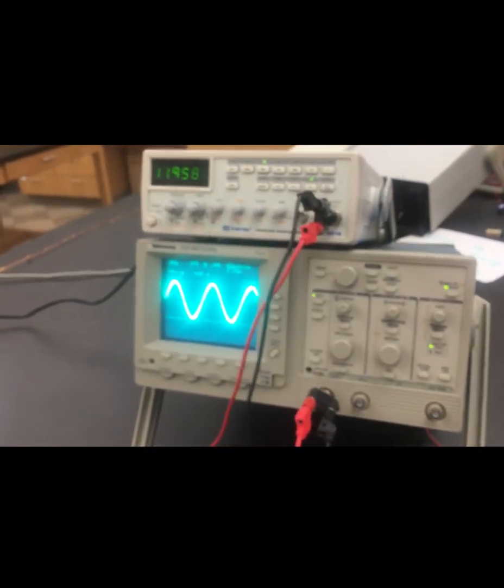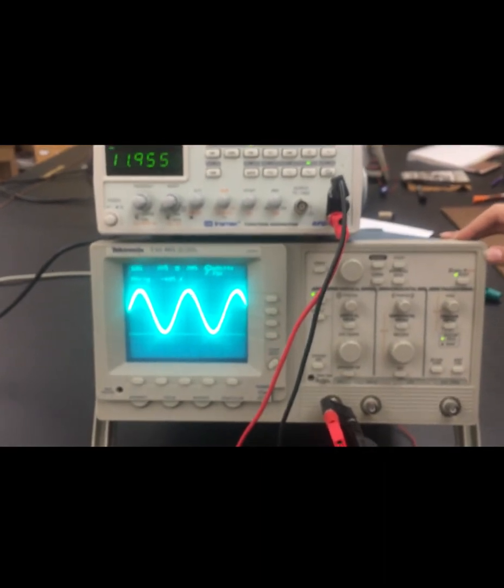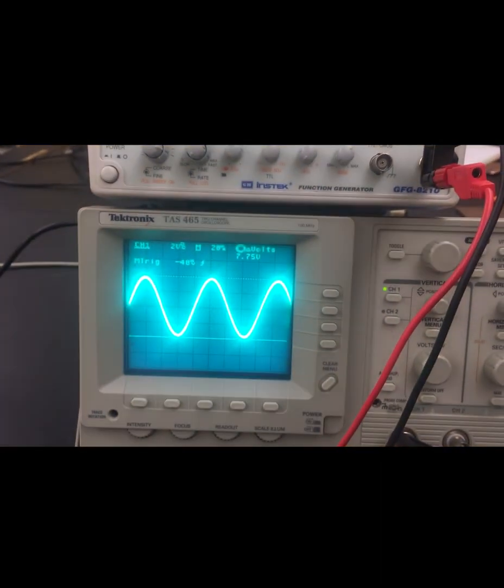We use the function generator as a voltage input and the oscilloscope to show our output voltage.